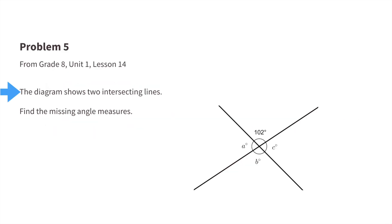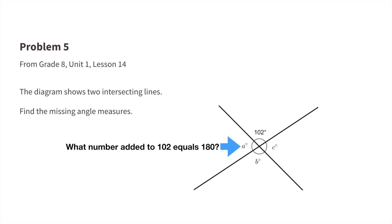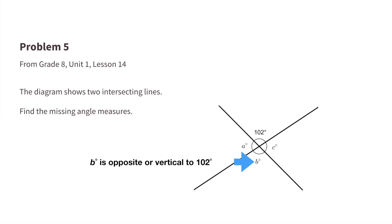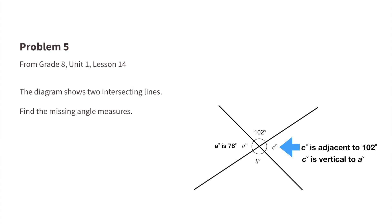Number five: the diagram shows two intersecting lines. Find the missing angle measures. Part a: what number added to 102 equals 180? A plus 102 equals 180, so 180 minus 102 equals A, and A measures 78 degrees. Part b: B is opposite, or vertical, to 102 degrees, so B measures 102 degrees. Part c: C is adjacent to 102 and vertical to A. Since angle A is 78 degrees, angle C is also 78 degrees.